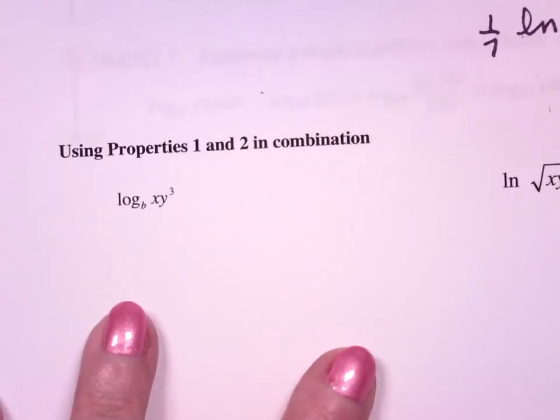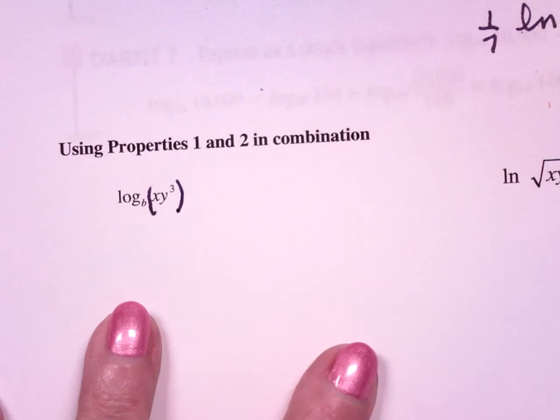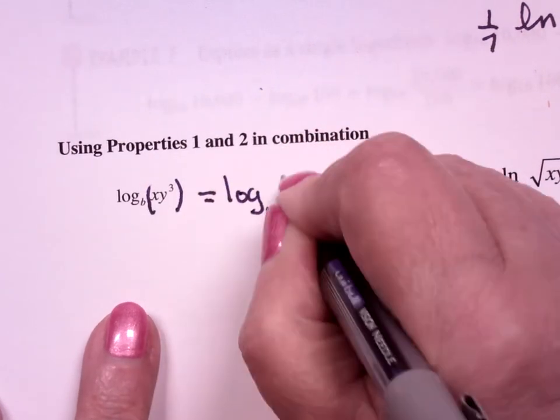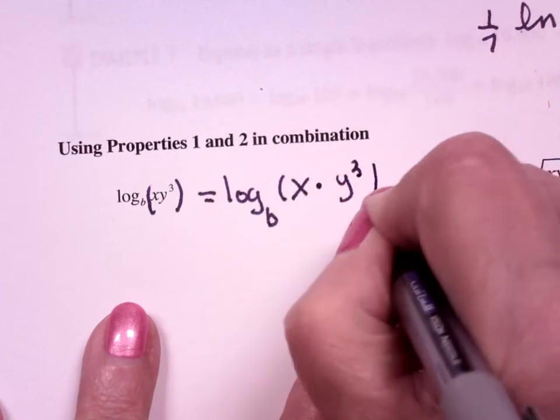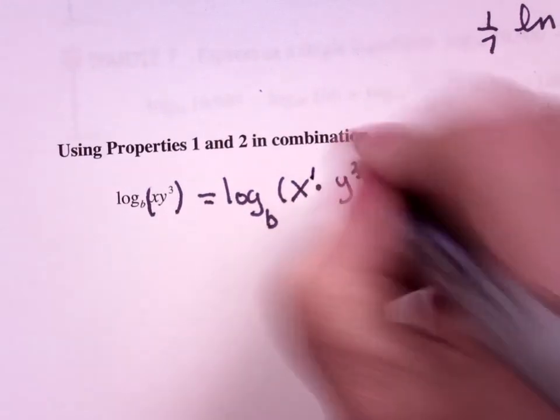Now in combination, here's your argument. So when I look at this guy, this is log base b of x times y cubed. That y cubed has nothing to do with that x, because x is really to the 1 power.